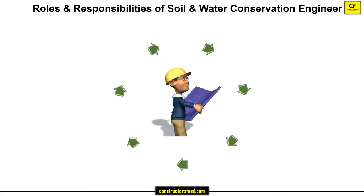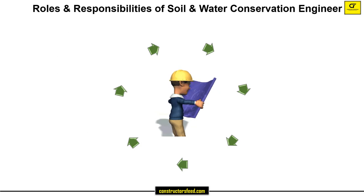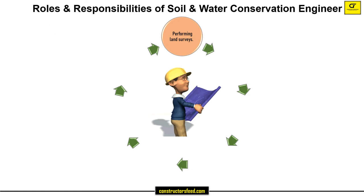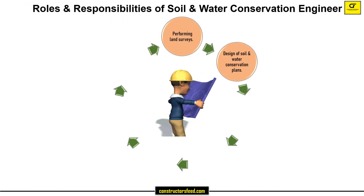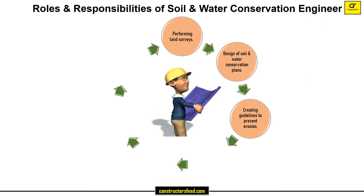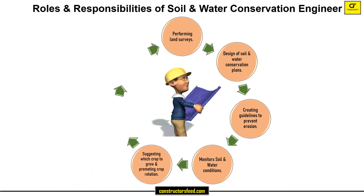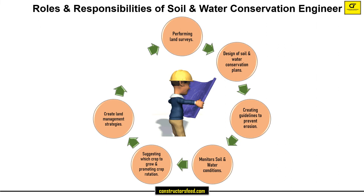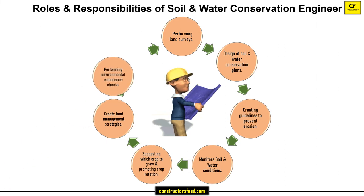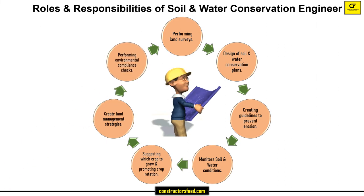Some of the Roles and Responsibilities of a Soil and Water Conservation Engineer include: Performing Land Surveys, Design of Soil and Water Conservation Plans, Creating Guidelines to Prevent Erosion, Monitoring Soil and Water Conditions, Suggesting Which Crop to Grow and Promoting Crop Rotation, Creating Land Management Strategies, and Performing Environmental Compliance Checks.